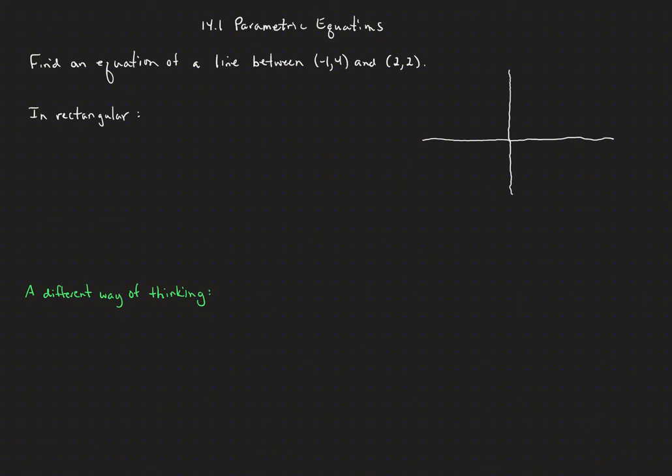In this video, we're going to talk about section 14.1, what are called parametric equations. To start with, let's revisit an old problem. Suppose we wanted to find an equation of a line between the point negative 1, 4 and the point 2, 2. In what we would call rectangular coordinates, or rectangular form, we would first look for the slope.